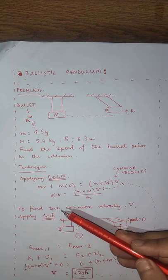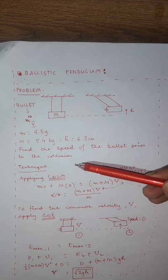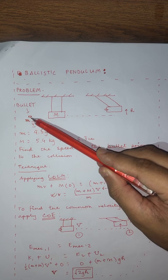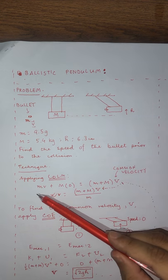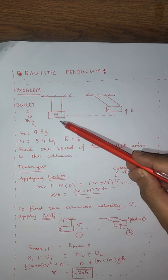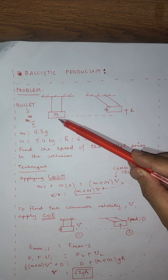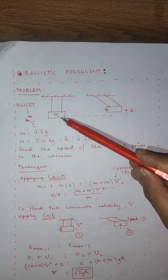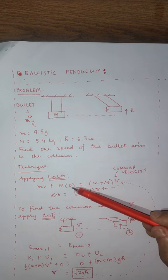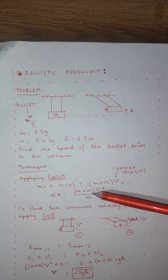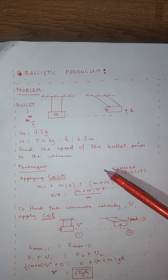In conservation of linear momentum, we write out the total linear momentum before the collision. Before the collision, the only thing that is moving is the bullet, so the linear momentum of the bullet is small m times small v. The block was not moving before the collision, so its momentum is capital M times zero.